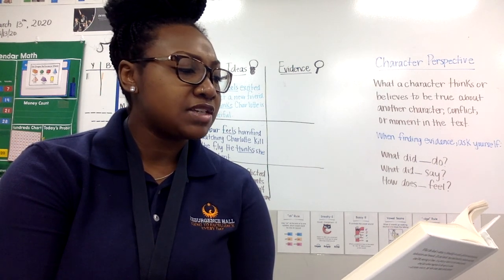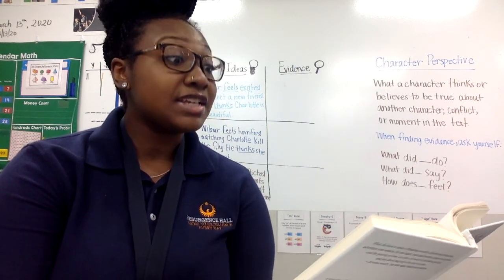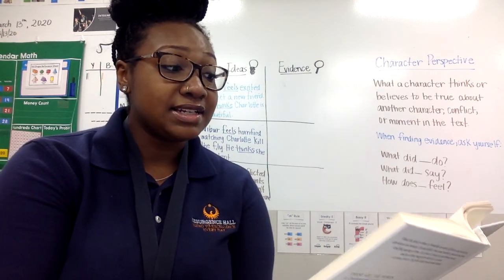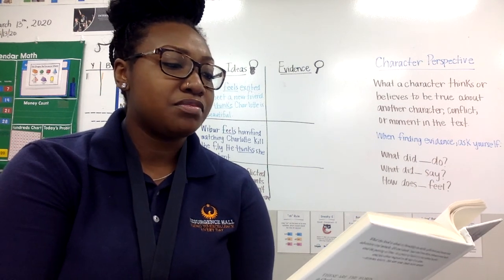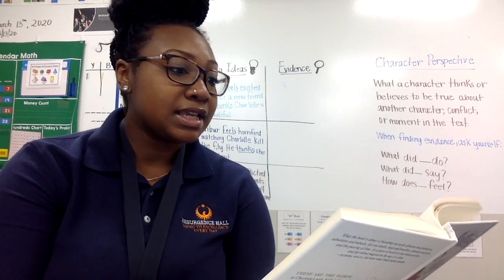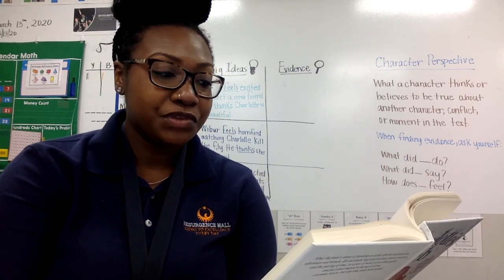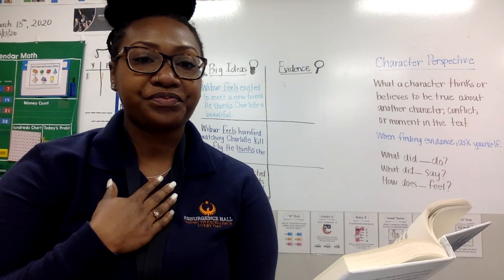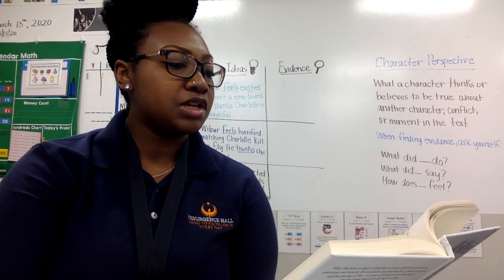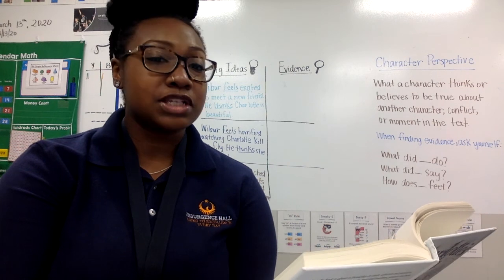Wilbur looked everywhere, searched his pen thoroughly. He examined the window ledge, stared up at the ceiling, but he saw nothing new. Finally, he decided he would have to speak up. He hated to break the lovely stillness of dawn by using his voice, but he couldn't think of any other way to locate the mysterious new friend who was nowhere to be seen. So Wilbur cleared his throat. 'Attention, please,' he said in a loud, firm voice. 'Will the party who addressed me at bedtime last night kindly make himself or herself known by giving an appropriate sign or signal?'